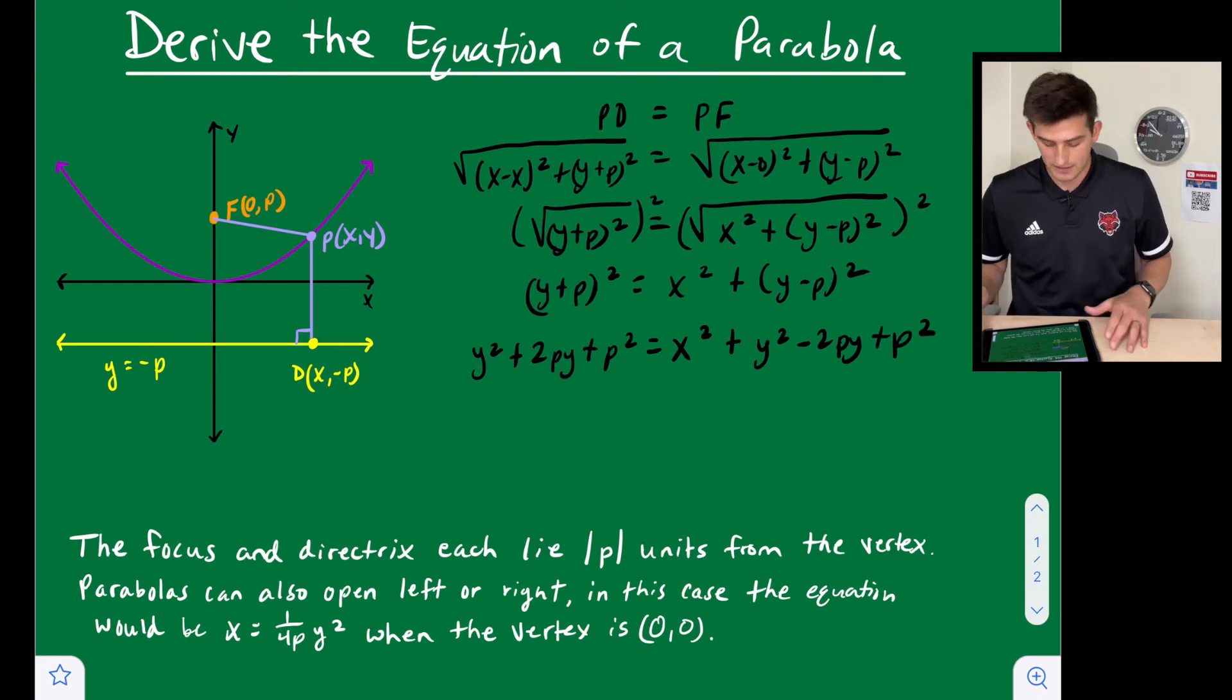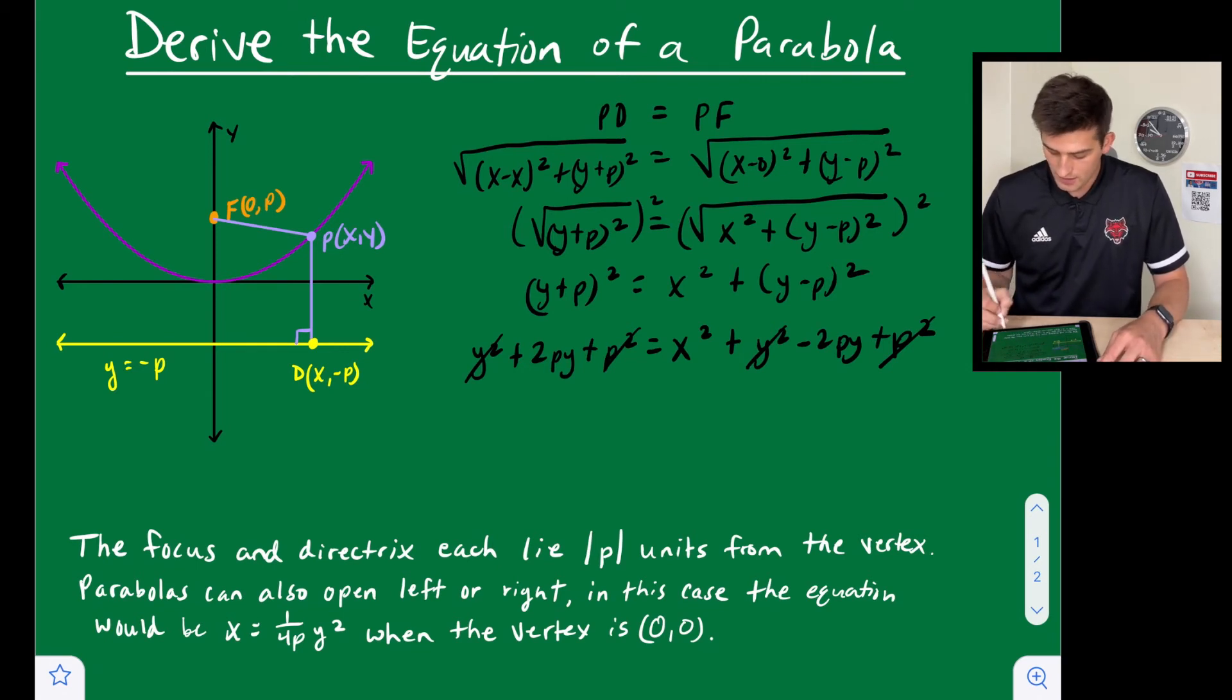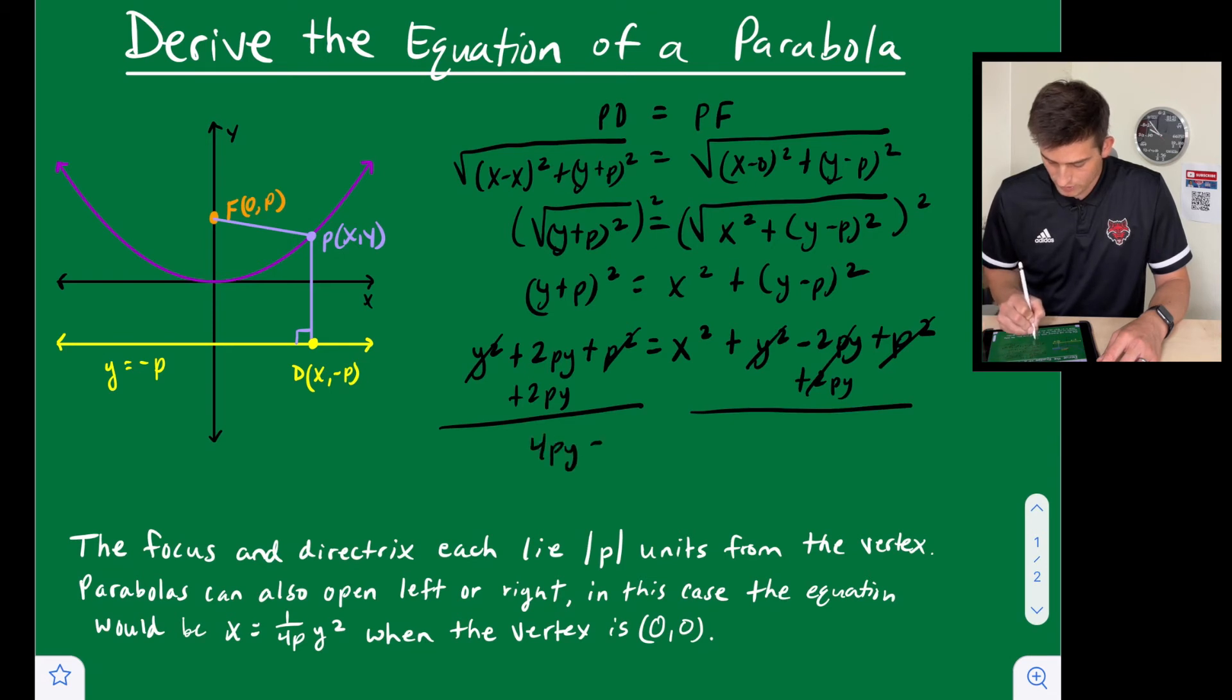Okay, now we can combine some like terms. So notice we have a y² on both sides and we have a p² on both sides, so those are going to cancel. And so now we have 2py = x² - 2py. So let's add 2py to both sides. So now that goes away, so now we have 4py = x². And we're going to divide both sides by 4p.